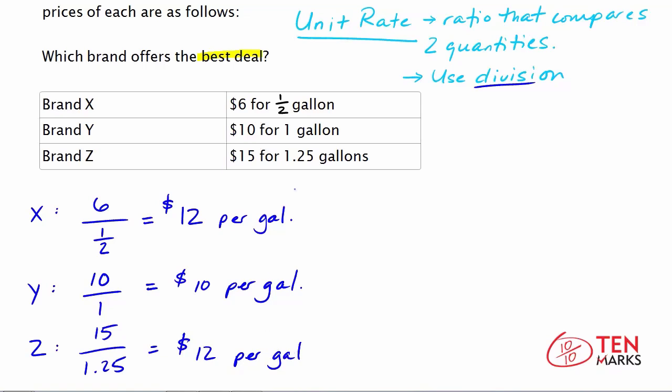Now, again, you want to find the best deal. So you want to find the lowest cost per gallon. And after calculating the unit rate, it becomes pretty clear that brand Y is the best because this has the lowest cost per gallon. $10 per gallon versus $12 per gallon of the other two brands. So brand Y is going to be the best choice.